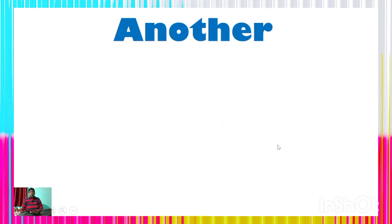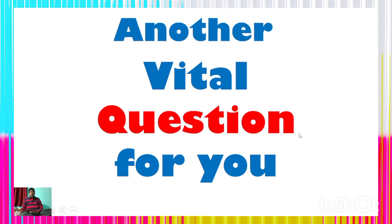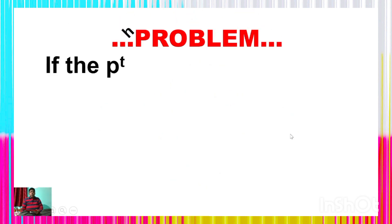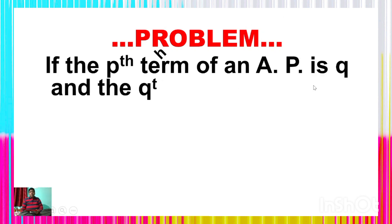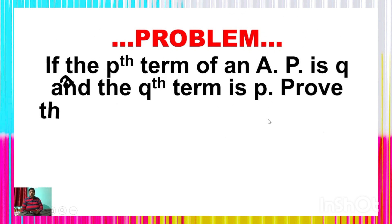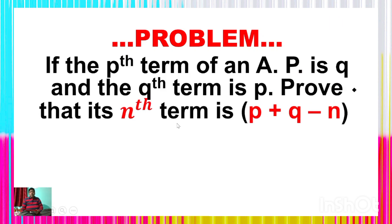Here is another vital question I am going to discuss. Look at the problem: if the pth term of an AP is q and the qth term is p, then prove that its nth term is p + q − n.